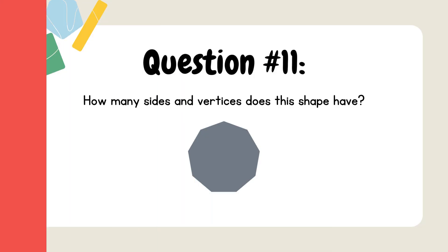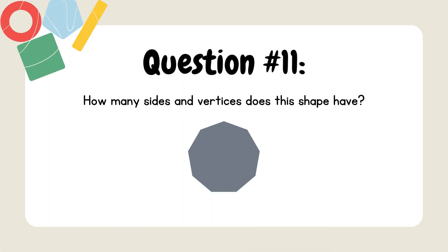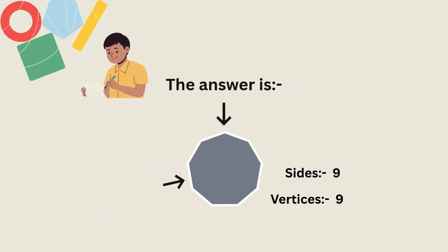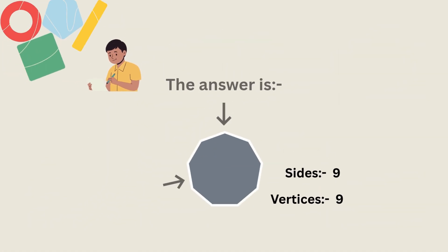Question 11. How many sides and vertices does this shape have? The answer is sides equal to 9 and vertices equal to 9.